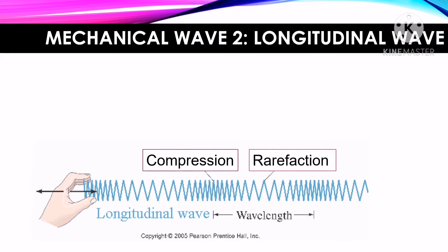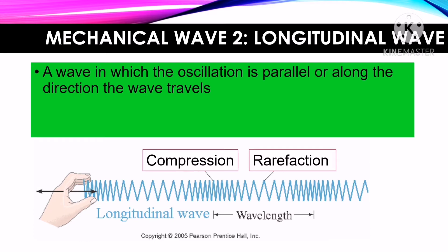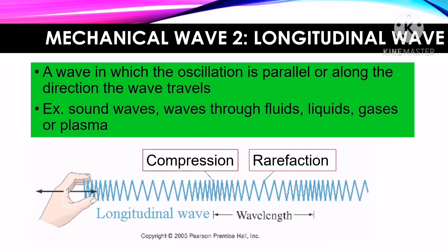The next type of mechanical wave is the longitudinal wave. A longitudinal wave is a wave in which the oscillation is parallel or along the direction the wave travels. Examples are sound waves, waves with movements, liquids, gases, or plasma.